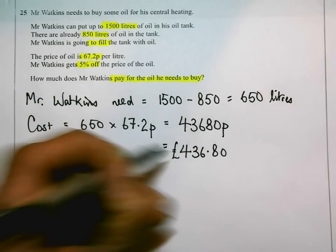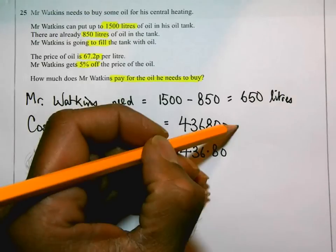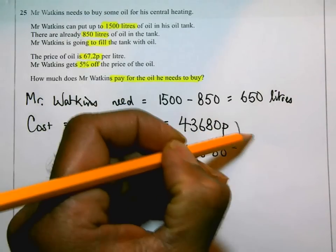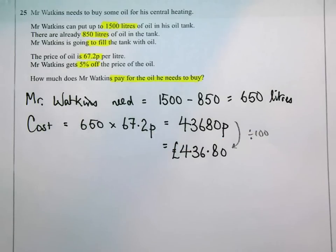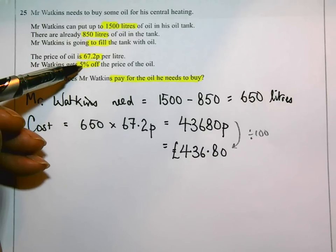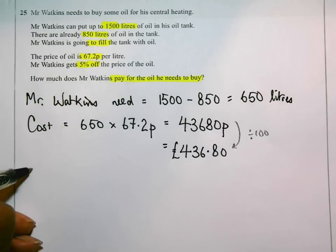That's to change it from pence to pounds, I need to divide by 100. Just put that there so you can see and understand what I've done. Now, the next bit of this, the question says he gets 5% off the price of the oil. So, 5% discount.